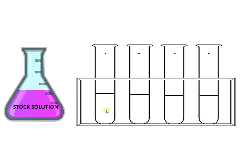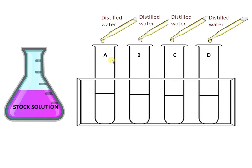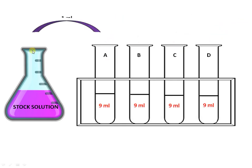First of all, take four test tubes, label the test tubes A, B, C, and D, and add 9 ml of distilled water to all of these test tubes. Transfer 1 ml of stock solution—pipette out 1 ml from the stock solution and transfer that to the tube labeled A.